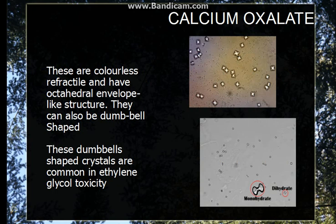Going first to the calcium oxalate crystal. These are most commonly present in the urine and they are normally present. They appear colorless and refractile and they have a characteristic envelope-like structure. The second form of the calcium oxalate crystal is dumbbell shape.